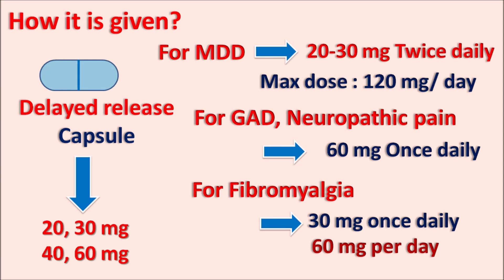This drug is available as a delayed-release capsule. For most disorders, the initial dose is 60 mg per day, but for fibromyalgia and other painful conditions, the initial dose may be 30 mg per day, which may be increased up to 60 mg per day. That's about Duloxetine.